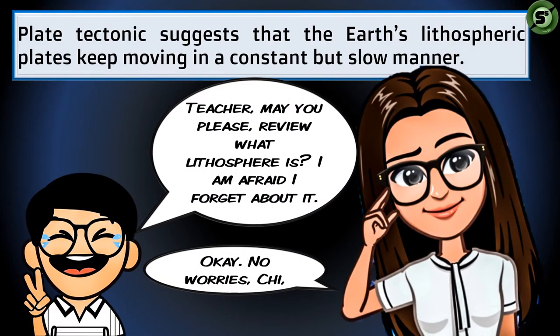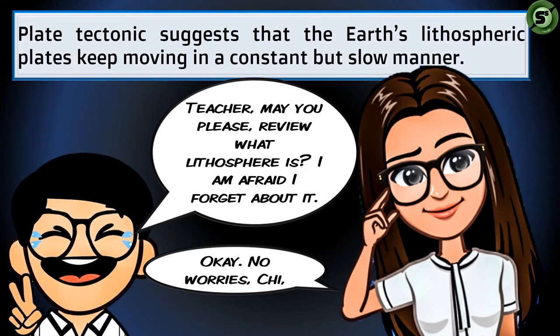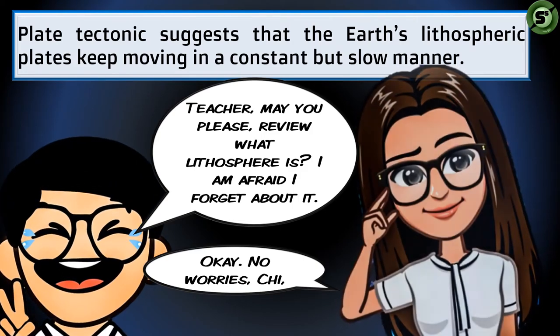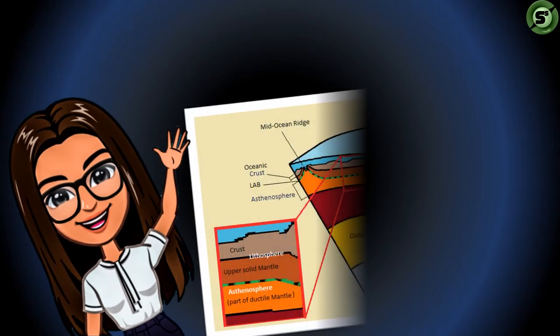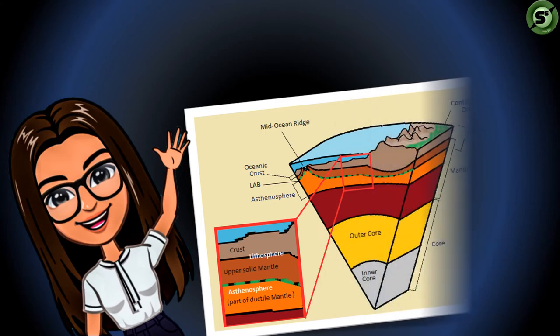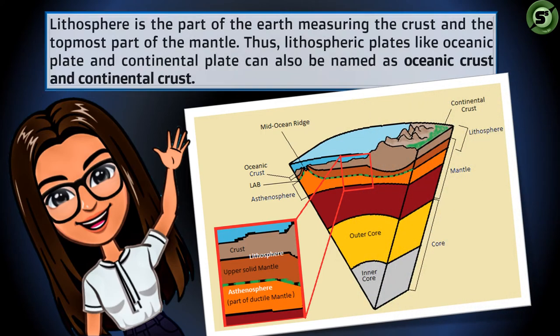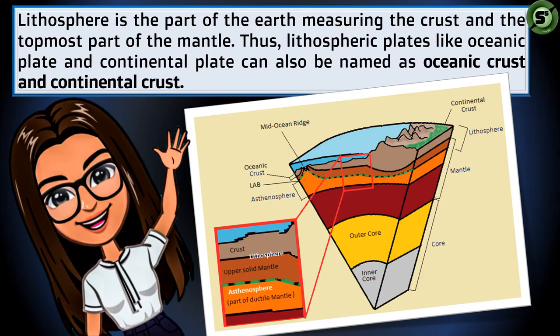Plate tectonic theory suggests that the earth's lithospheric plates keep moving constantly, but in a very slow manner. The earth has four different layers: the crust, the mantle, the outer core, and the inner core. The lithosphere is the part of the planet measuring from the crust down to the uppermost part of the mantle. Since the lithosphere covers the whole crust, lithospheric plates like oceanic plate and continental plate can also be named oceanic crust and continental crust — both terms are acceptable.